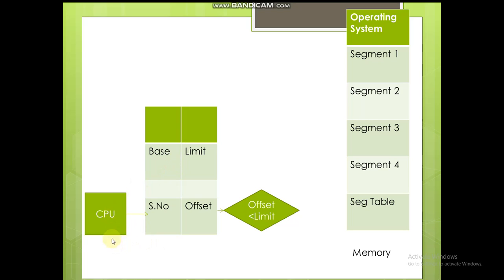Now let's see this diagram. The CPU has generated a base address. The two entries are base and limit, segment number and offset. If the offset is less than the limit, then it is valid and the address is generated. If it is invalid, then an error is shown. In main memory there is the operating system, and there are segments. The segment table has segments labeled 0, 1, 2, 3, 4 - each process gets a different segment.